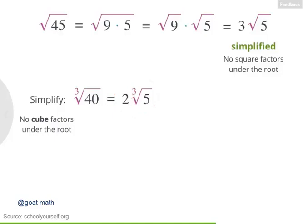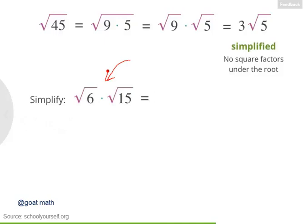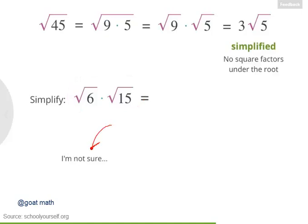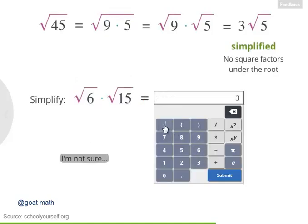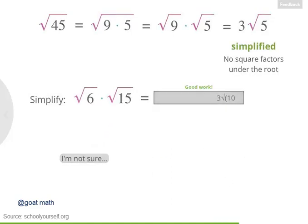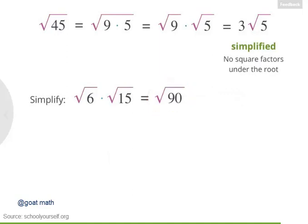For your final challenge, try simplifying the square root of 6 times the square root of 15. The square root of 6 times the square root of 15 equals the square root of 90, which simplifies to 3 root 10. Because 6 and 15 both have a common factor of 3, their product 90 has a square factor of 3 times 3, or 9 — and that's why you were able to simplify this expression.